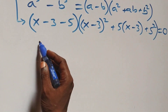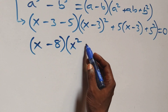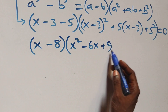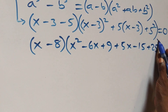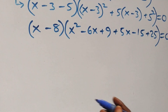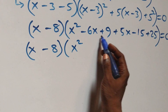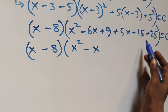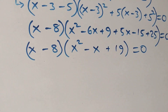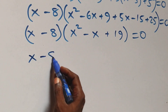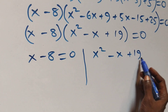Then here we have x minus 8 into bracket, then open bracket. The expansion gives us x squared minus 6x plus 9, then 5 open this bracket gives plus 5x minus 15, then plus 25, close bracket, equals to 0. Then we can write this as x minus 8 into bracket, then open bracket: x squared minus 6x plus 5x gives minus x, then 25 minus 15 is 10, then 10 plus 9 is 19, plus bracket equals to 0.